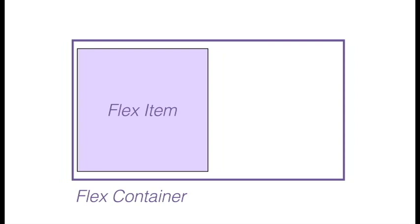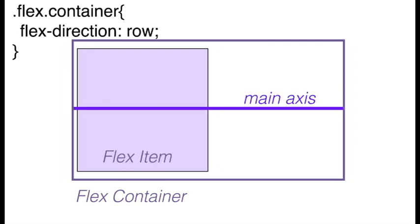In your CSS code, underneath where you have set the display property to flex, you will then add another property to the flex container called flex-direction, which is the word flex and then dash direction.